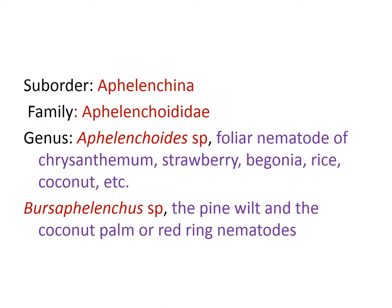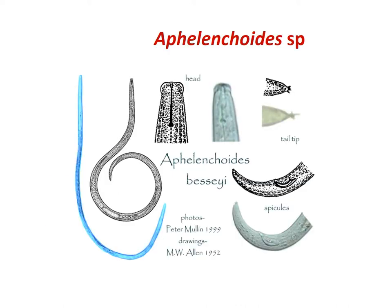The next suborder is Aphelenchina, family Aphelenchoididae. The genus Aphelenchoides species is a foliar nematode — it feeds on the above-ground parts of plants, namely the leaves of chrysanthemum, strawberry, and begonia. In rice, Aphelenchoides species causes the white tip disease of rice. Then Bursaphelenchus xylophilus causes pine wilt disease affecting pine, wheat, and coconut. Here we can see the Aphelenchoides species.